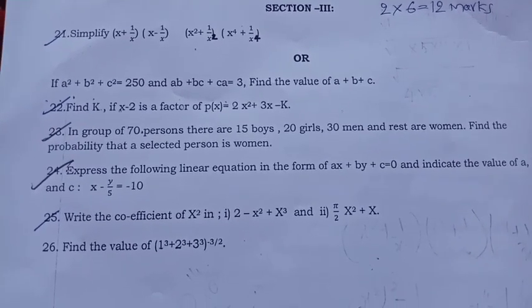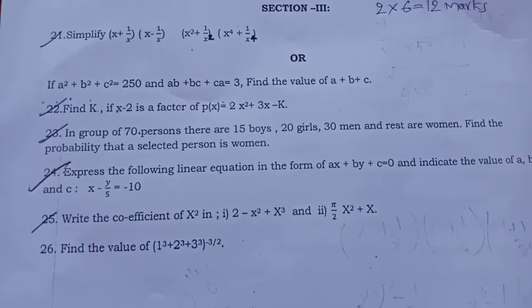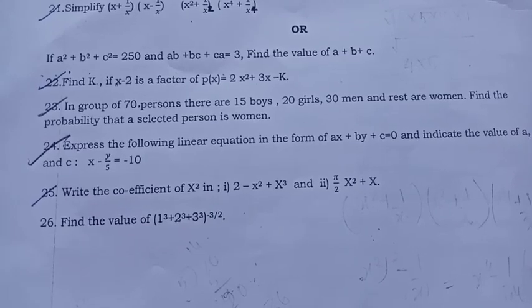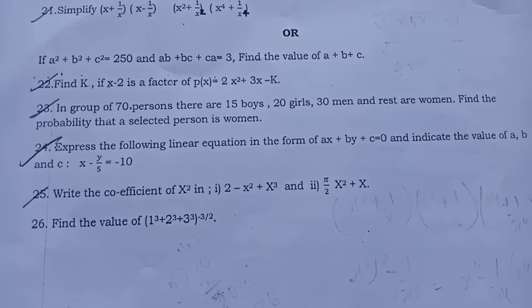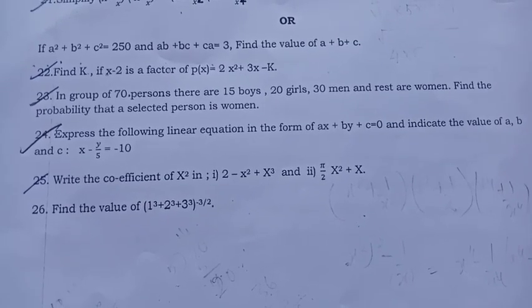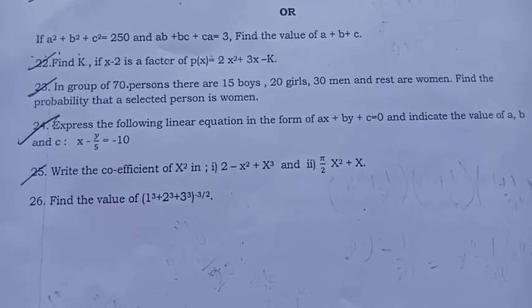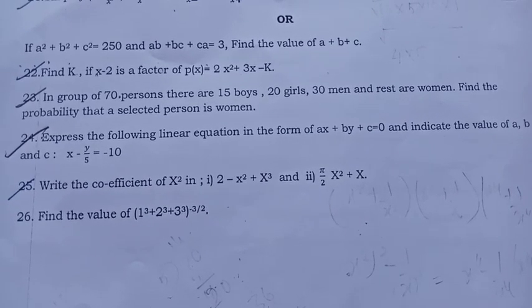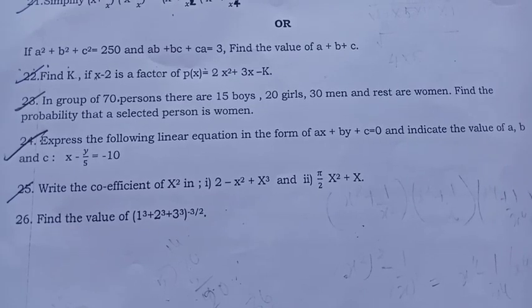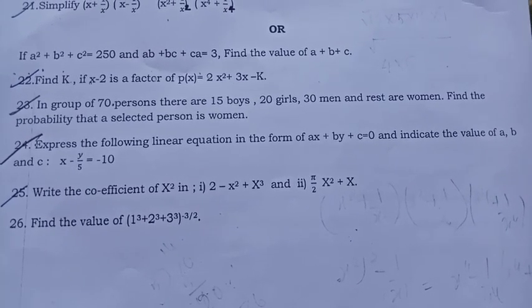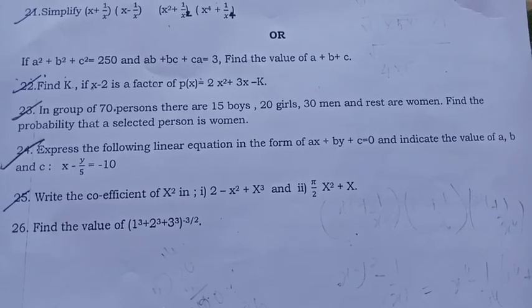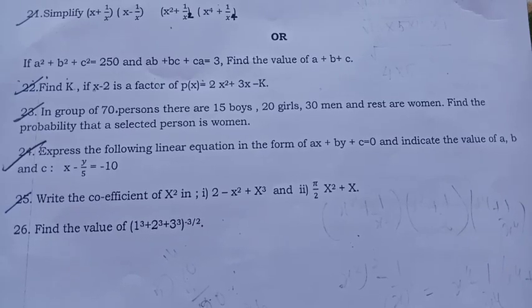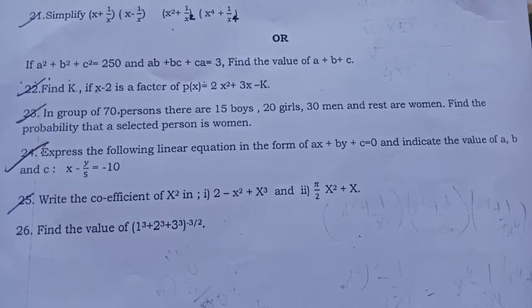In a group of 70 persons, there are 15 boys, 20 girls, 30 men and rest are women. Find the probability that a selected person is woman. Express the following linear equation in the form of ax plus by plus c equal to 0 and indicate the value of a, b and c: x minus y by 5 equal to minus 10. Write the coefficient of x square in 2 minus x square plus x cube and 5 by 2 x square plus x. Find the value of 1 cube plus 2 cube plus 3 cube raised to minus 3 by 2.